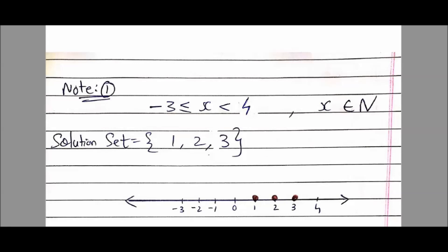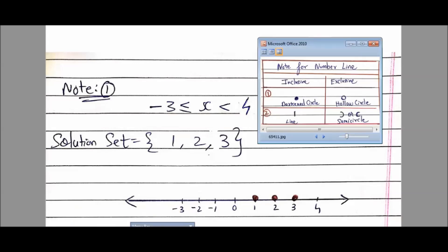To explain the number line, here is an important note. Inclusive: whenever a number is included in the range — meaning there is an equal-to symbol — we denote it by a darkened circle. Whenever a number is exclusive — not included, no equal-to symbol — we denote it by a hollow circle.